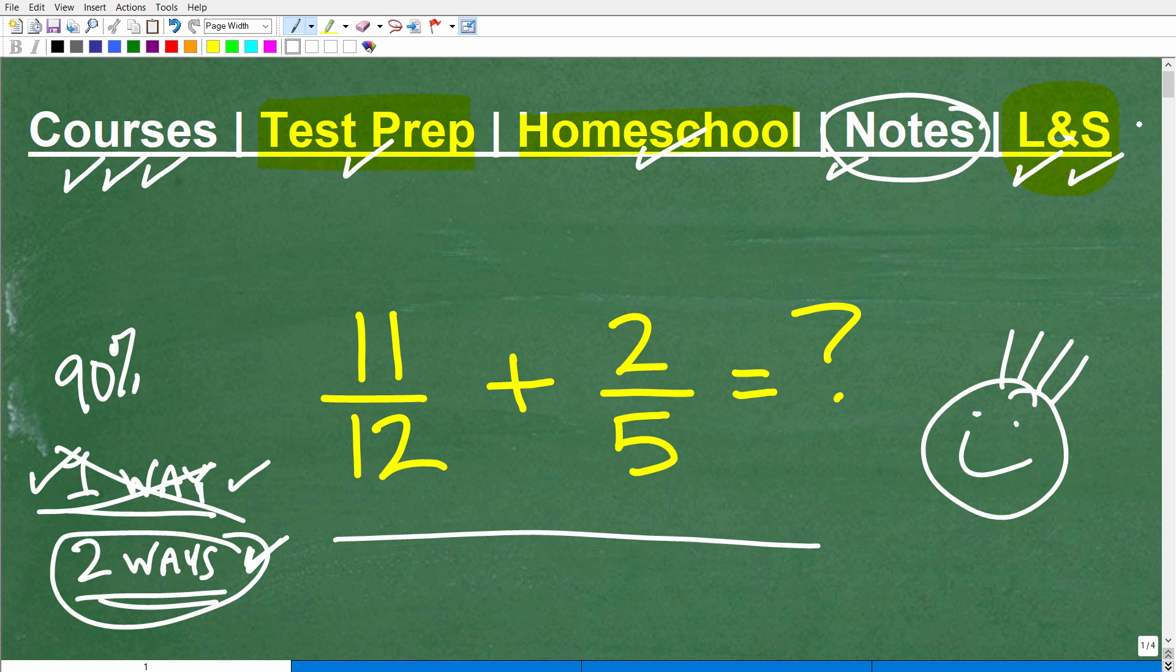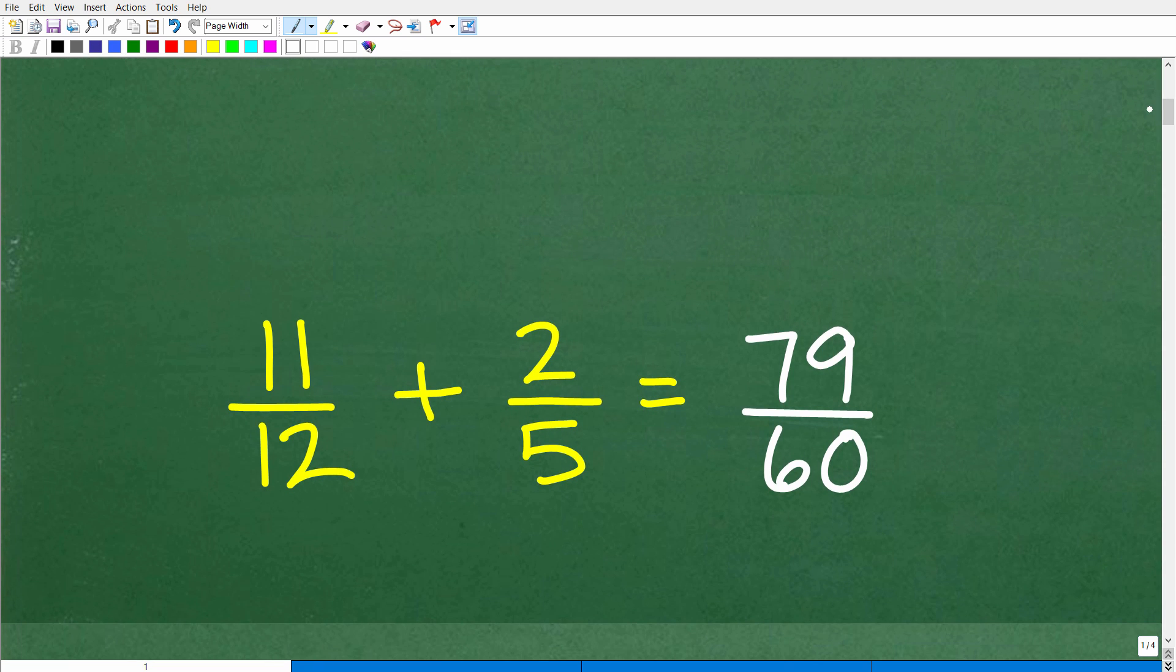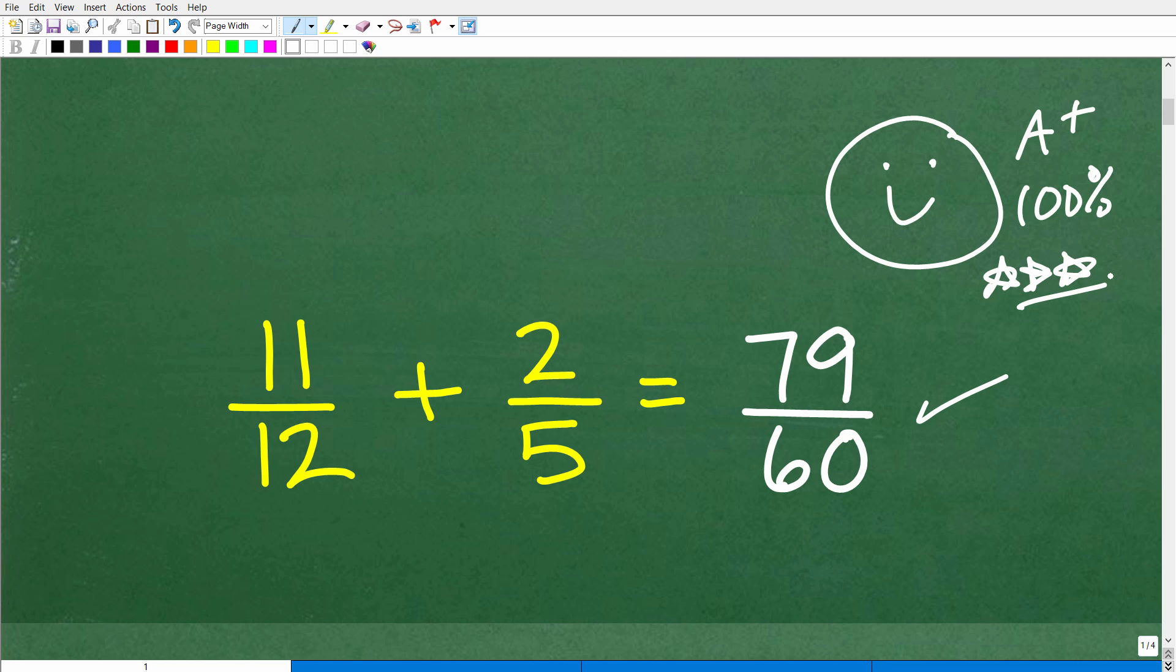Okay, so let's go ahead and get into this problem. I'm going to show you the answer right now. If you want to pause the video and work on it for a second, go ahead. So there you go. 11 twelfths plus 2 fifths is equal to 79 over 60. And if you got that right, well, let me go ahead and give you a nice little happy face and a plus and 100%. Matter of fact, I will give you multiple stars so you can have an extra special day.